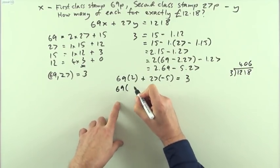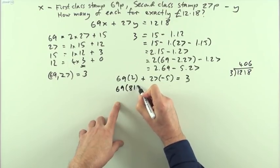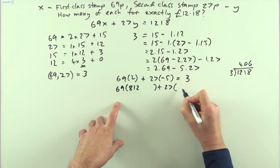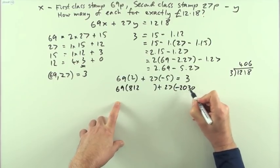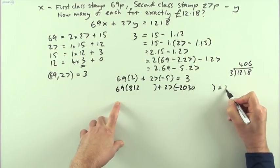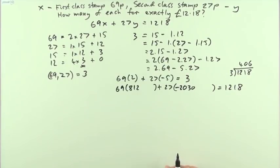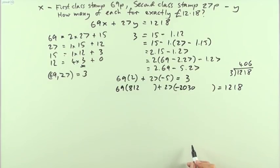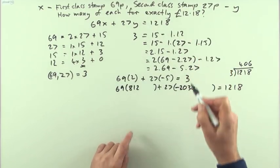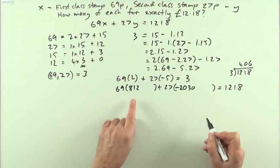So I'll have 69 times, and that will be 812, plus 27 times, and then 5 times it, negative 2030, will equal the 1218. Now obviously that's not going to be the number of stamps that we're going to use because I'm not going to trade in 2030 stamps in order to spend 1218 buying 812.